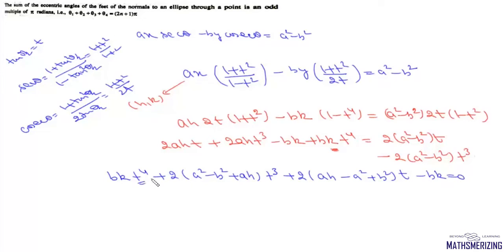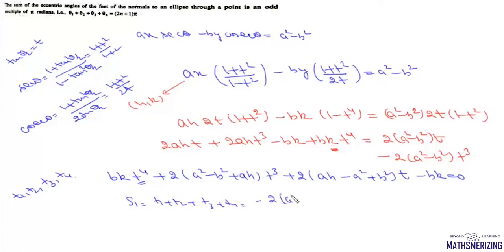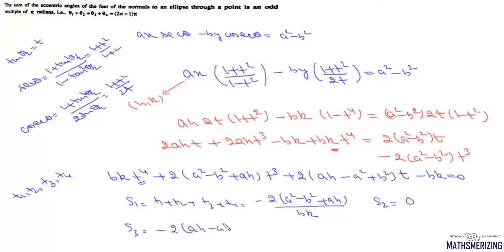This equation has 4 real roots, corresponding to the 4 normals from the point. Let the roots be t₁, t₂, t₃, t₄. By Vieta's formulas: S₁ = t₁ + t₂ + t₃ + t₄ = -2(a² - b² + ah) / (bk). S₂ = 0. S₃ = -2(ah - a² + b²) / (bk). S₄ = -1.